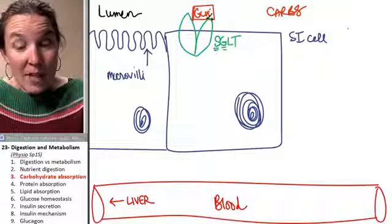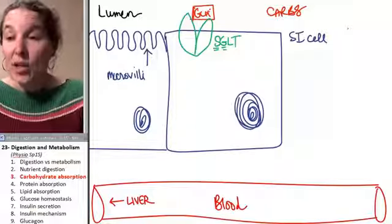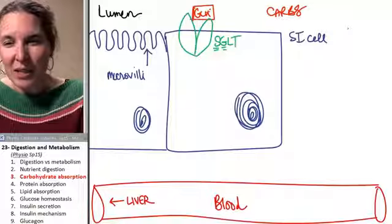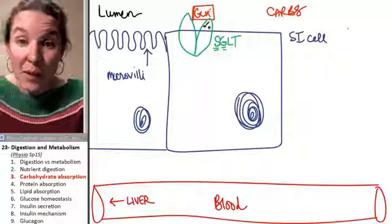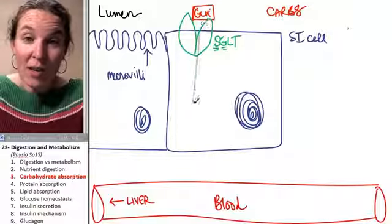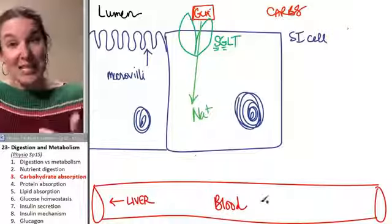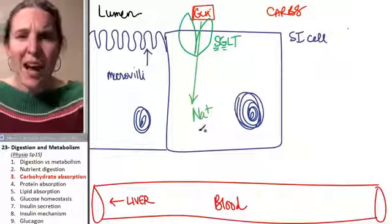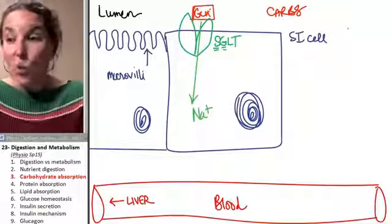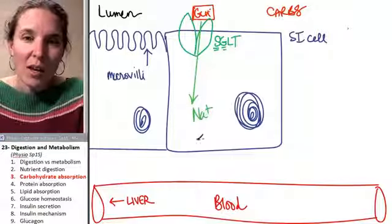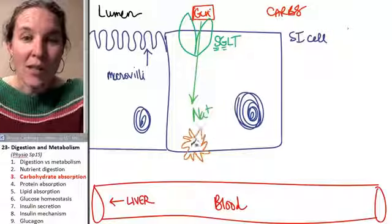SGLT operates by taking glucose against a concentration gradient by moving sodium down a concentration gradient. So sodium is coming into the cell through SGLT down its concentration gradient. If you want a sodium concentration gradient, what are you going to have to do? You're going to have to pump sodium out of the cell.